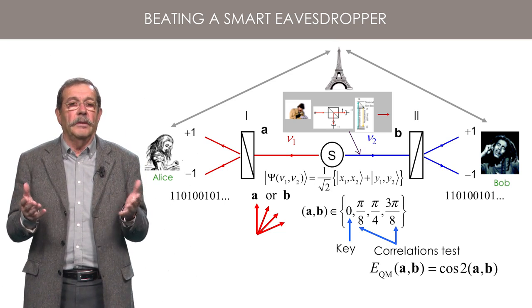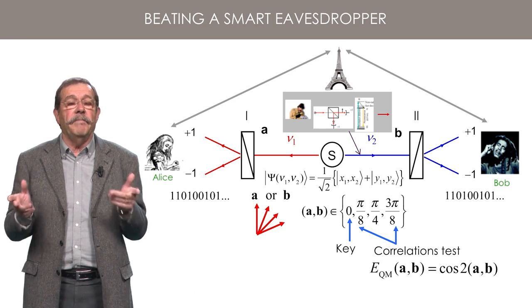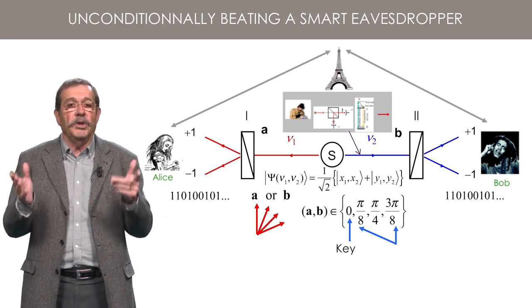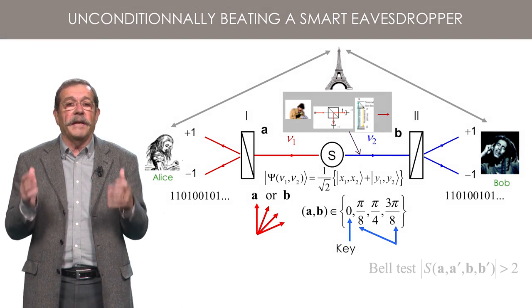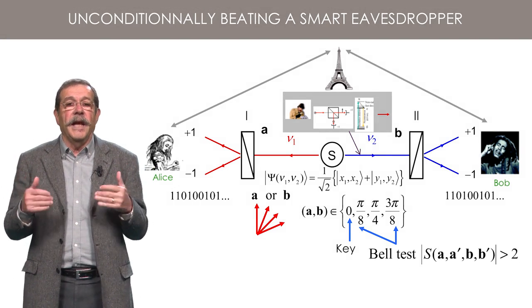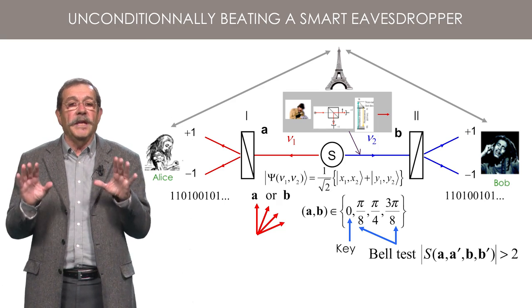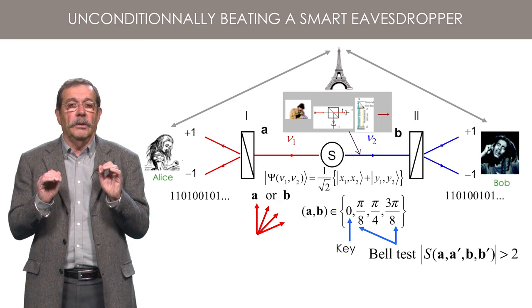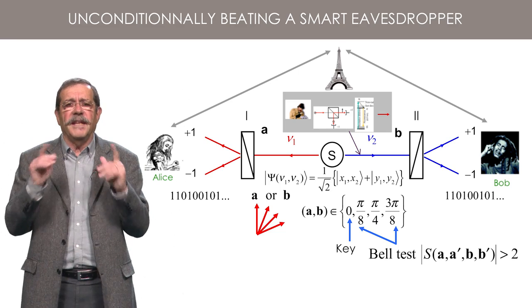The method above is based on the assumption that the exact correlation predicted by quantum mechanics is the one that should be observed. In fact, the method is more general, independent of any precise modeling of the correlations. It suffices to make Bell's inequality tests and to observe a violation of Bell's inequality to know that there is no eavesdropper on the quantum channel. Any idea of the fundamental reason for that statement?